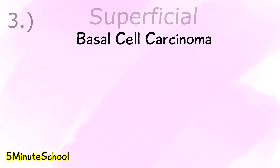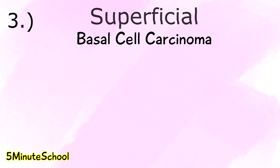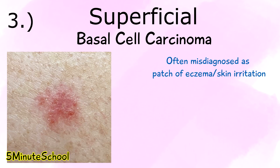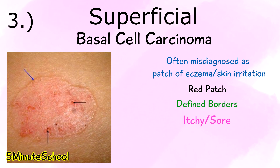The last type is the superficial type, which can sometimes be misdiagnosed as a patch of eczema or just some skin irritation. It looks like a red patch, which can be itchy and sensitive, and the borders are often well defined. This type can occur on the head, neck, and trunk of the body. There's no telangiectasia, but the borders can be slightly elevated or raised compared to the surrounding skin.